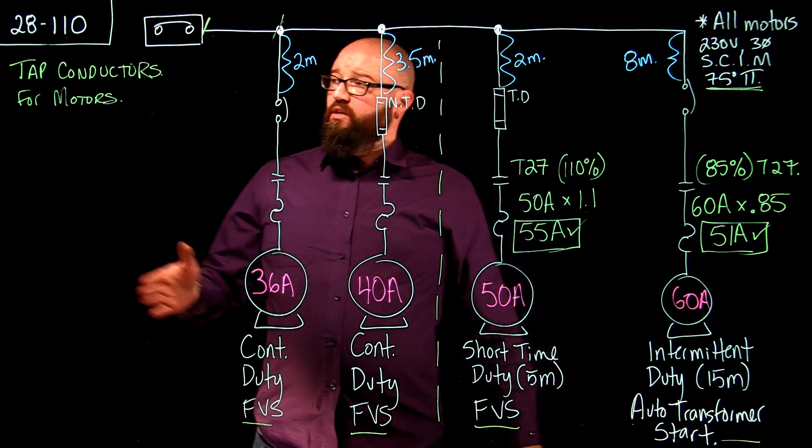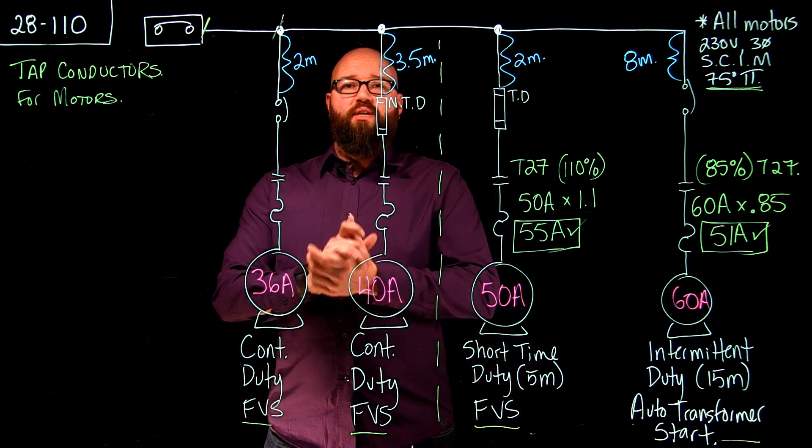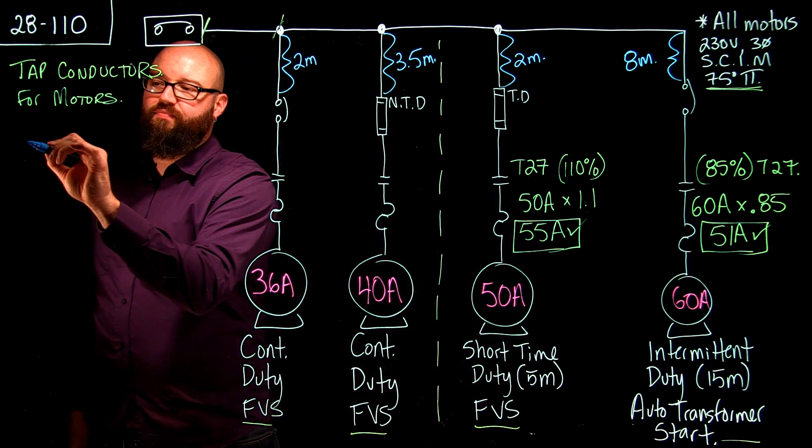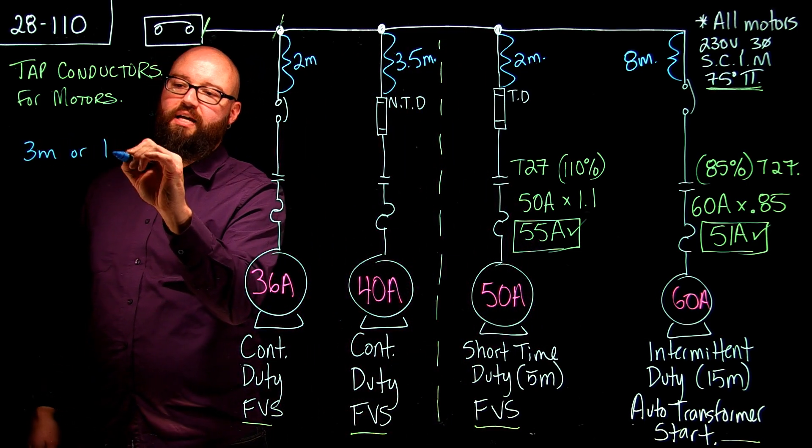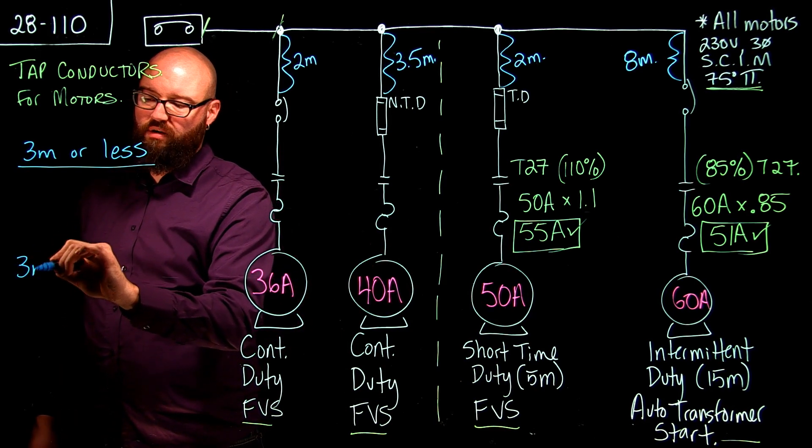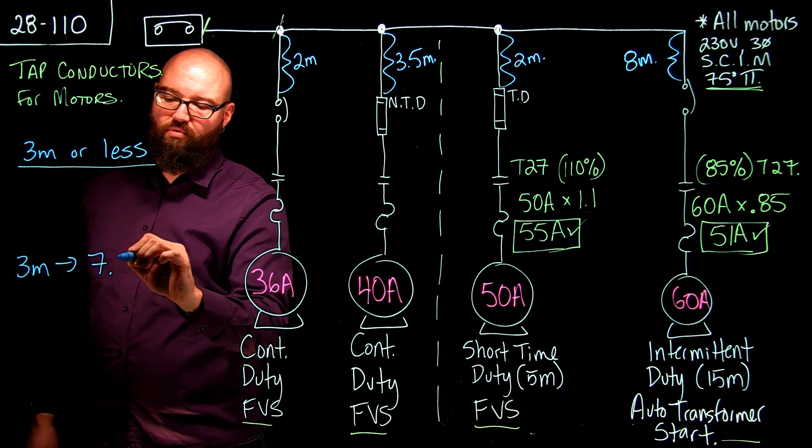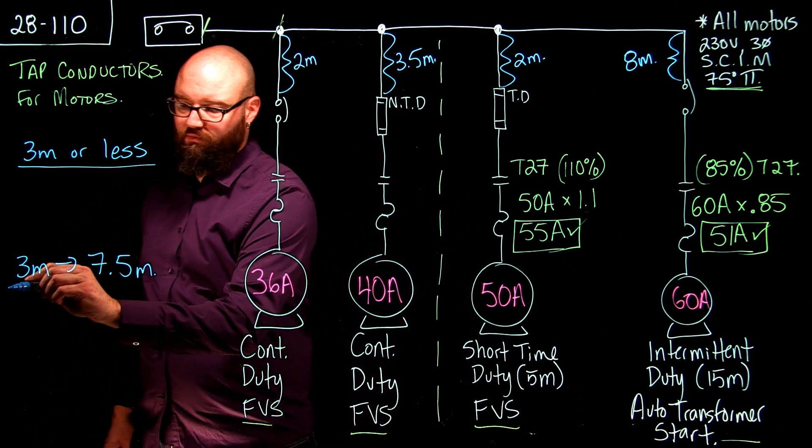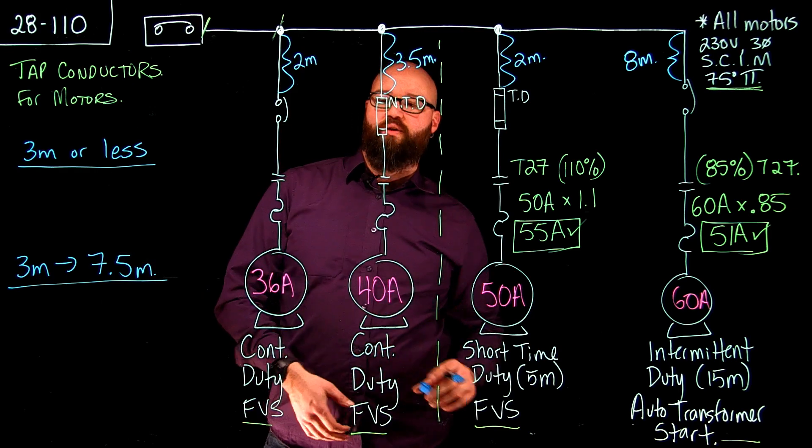So 28110 breaks it down into whether or not your tap conductor is 3 meters or less, or really between 3 meters up to 7.5 meters. So let's take a look at our first one here.